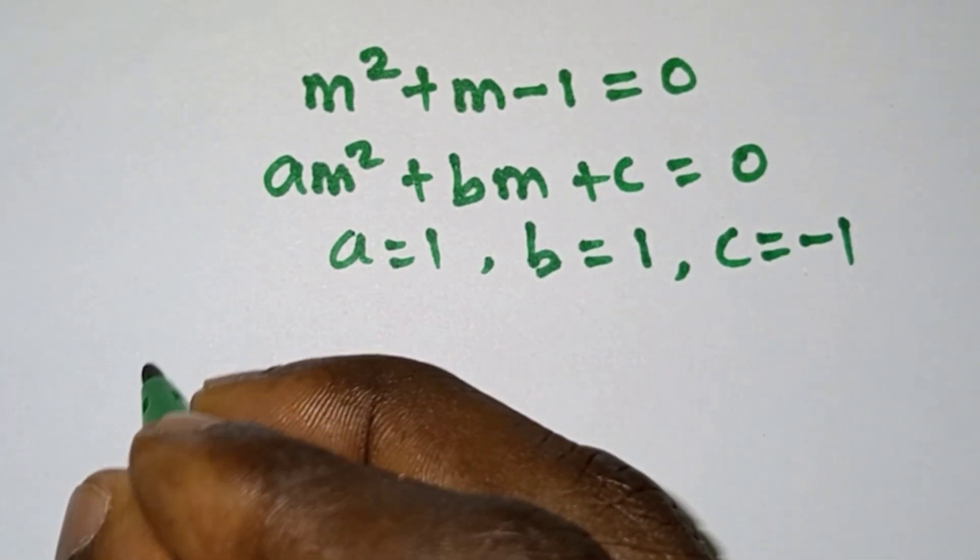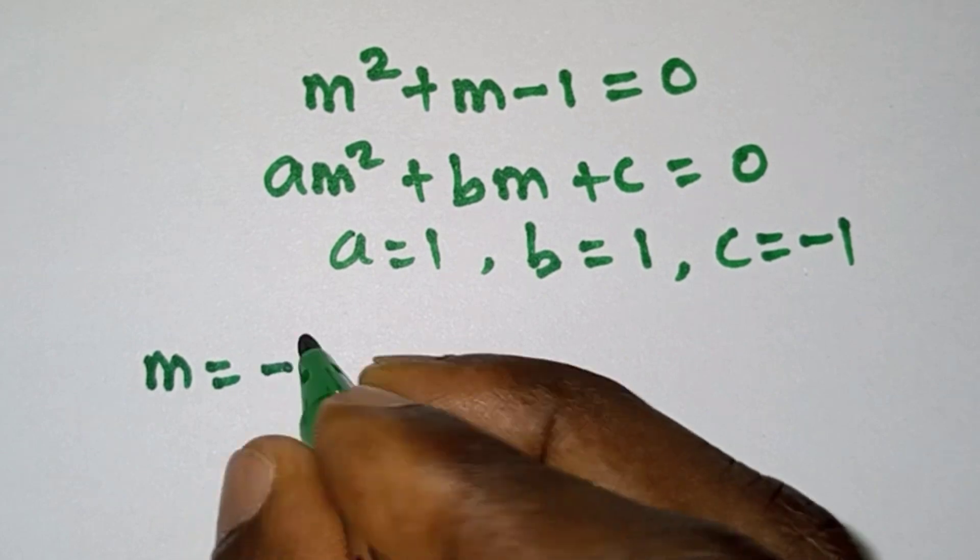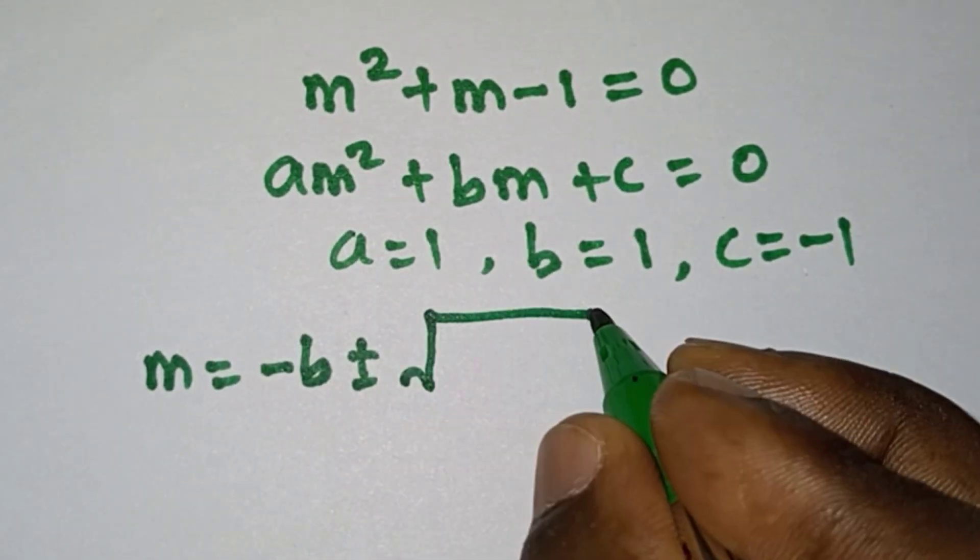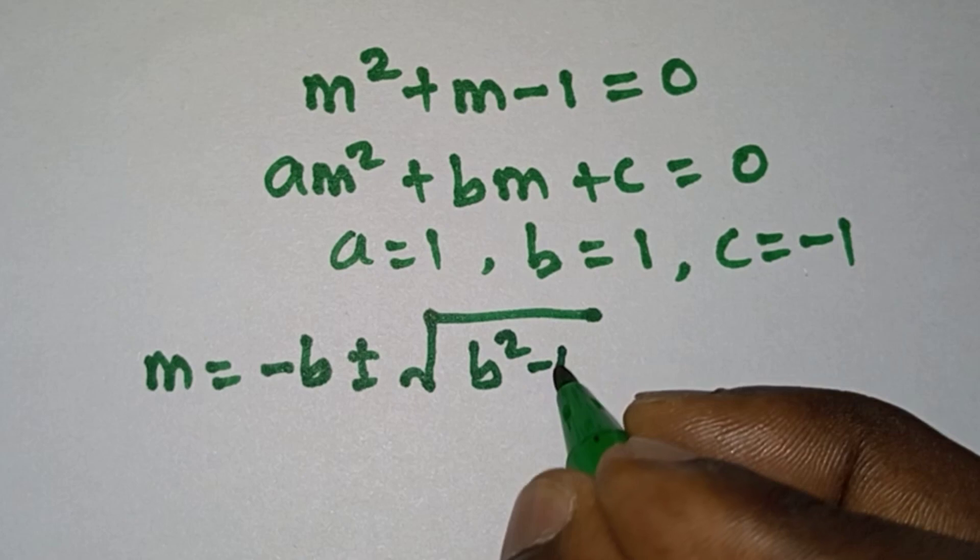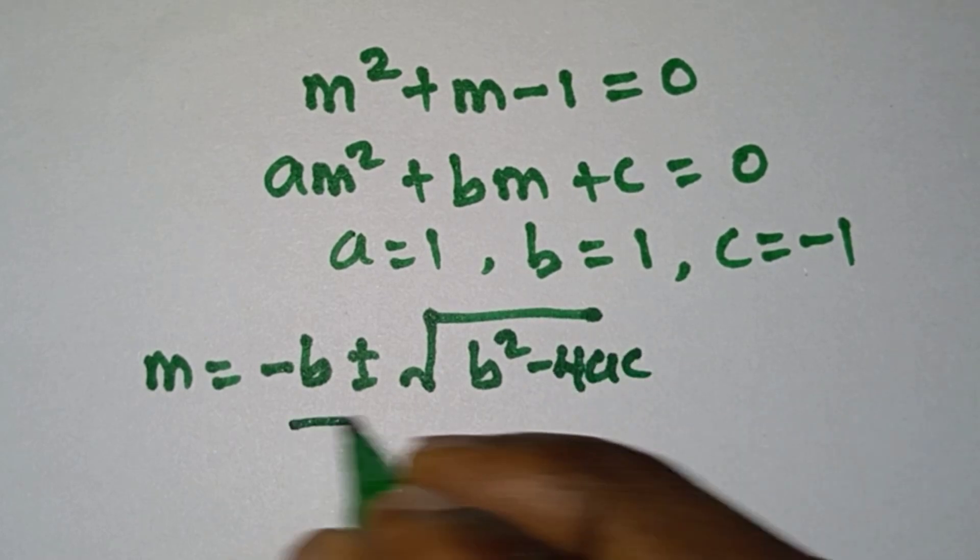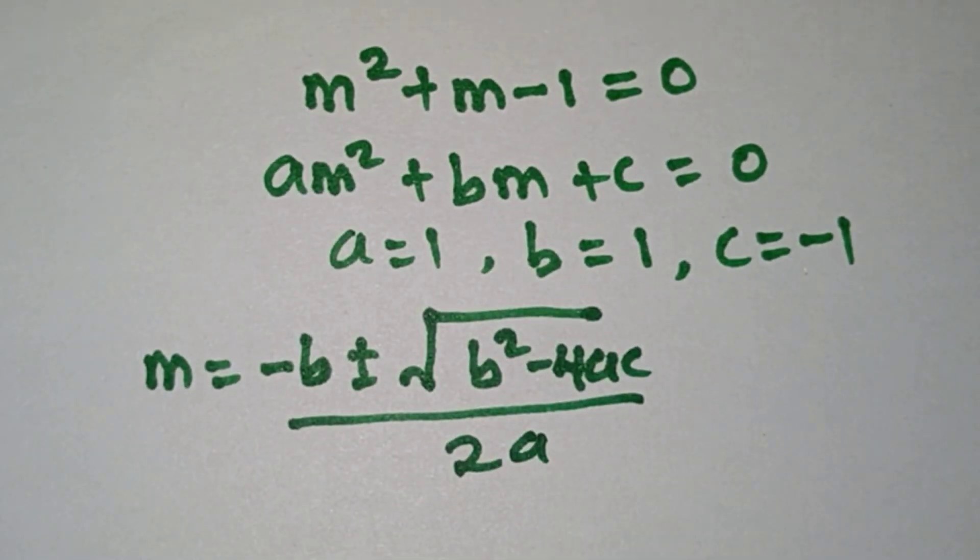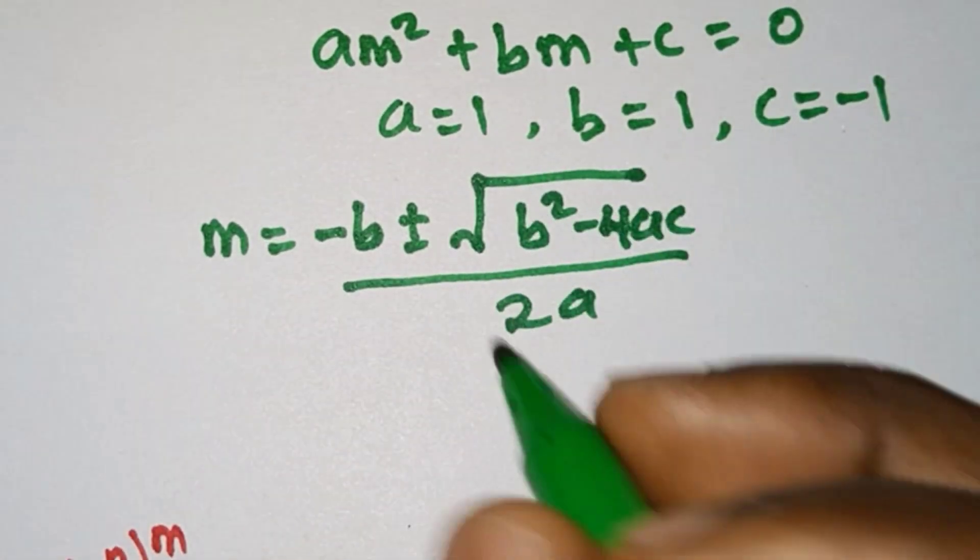Now let's use the quadratic formula: m = (-b ± √(b^2 - 4ac))/(2a). Let's put in the values of a, b and c.